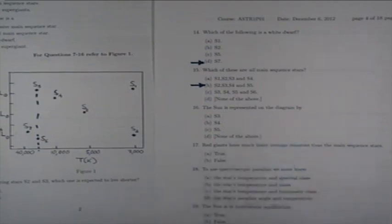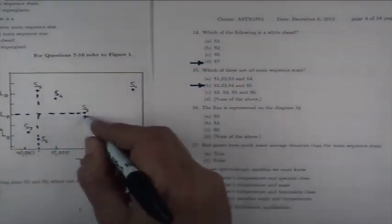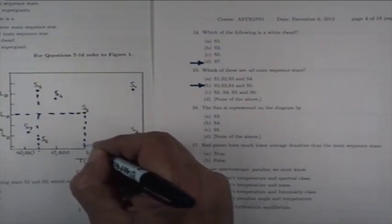Then, the Sun is represented on the diagram by which one? S3. It has luminosity of one and the surface temperature of about 6,000, so it's S3.